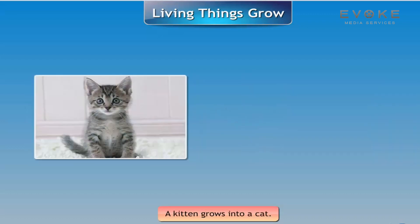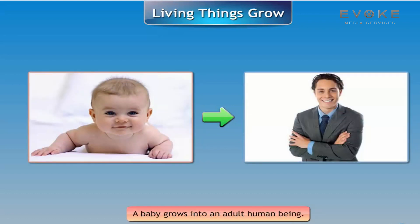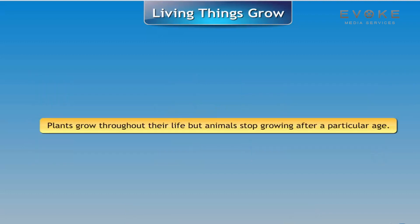For example, a puppy grows into a dog, a kitten grows into a cat, and a baby grows into an adult human being. Plants grow throughout their life, but animals stop growing after a particular age.